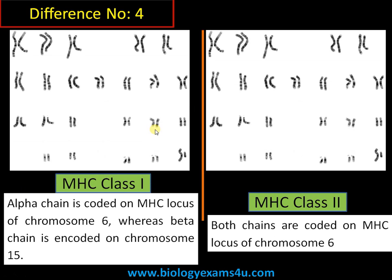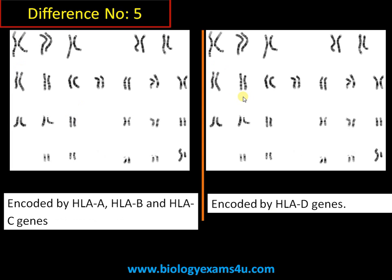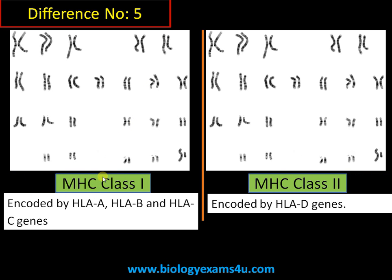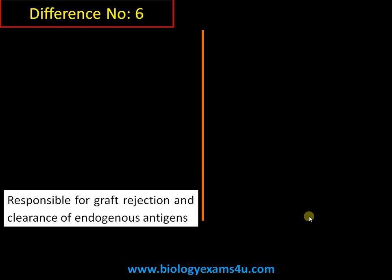Difference number four: in MHC class 1, the alpha gene is encoded on the MHC locus of chromosome 6, whereas the beta gene is encoded on chromosome 15. In MHC class 2, both genes are encoded on the MHC locus of chromosome 6. Difference number five: MHC class 1 is encoded by HLA-A, HLA-B, and HLA-C genes, whereas MHC class 2 genes are encoded by HLA-D genes.